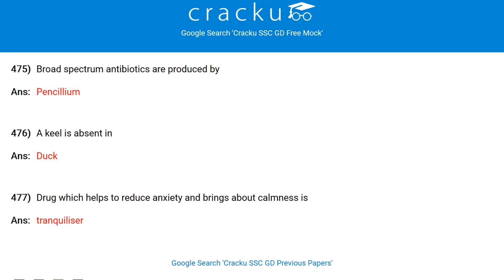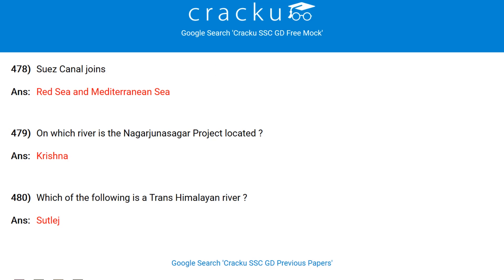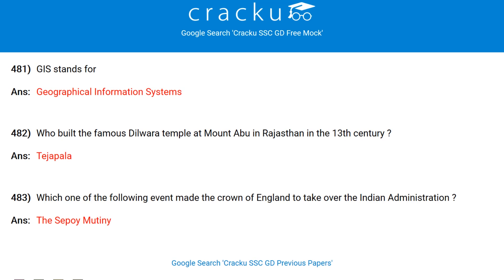Shadow Cabinet is a feature of the administrative system of Britain. An increase in the quantity supplied suggests a movement up along the supply curve. Which area of India was known as Avantika in ancient times? Malwa. Black death is plague. Glycogen, starch and cellulose are polymers of glucose. The pigment that protects plants from harmful effects of ultraviolet rays is called phycocyanin. Broad spectrum antibiotics are produced by Penicillium. A keel is absent in duck. Drug which helps to reduce anxiety and brings about calmness is a tranquillizer.